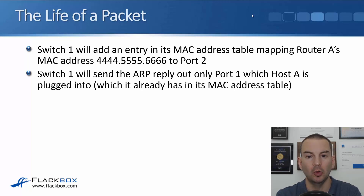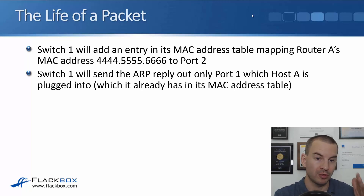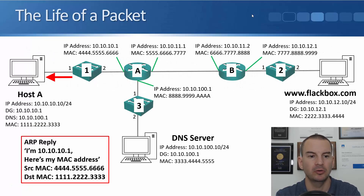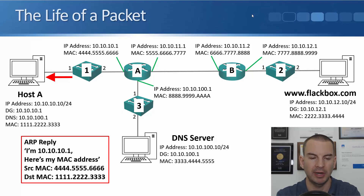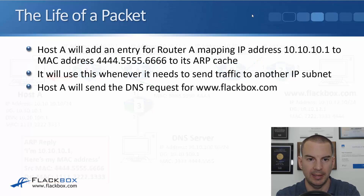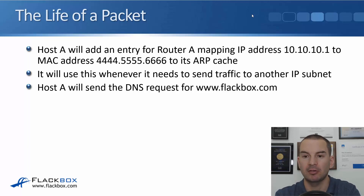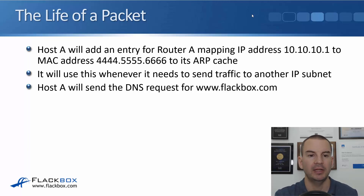Router A sends the ARP reply. Switch1 receives it and adds an entry mapping Router A's MAC address 4.5.6 to port 2. Switch1 then sends the ARP reply out only port 1 — where Host A is plugged in — because it's a unicast reply and the switch already has Host A's MAC address in its MAC address table. The ARP reply says: I'm 10.10.10.1, here's my MAC address. Source MAC is 4.5.6 from Router A, destination MAC is 1.2.3 on Host A. Host A receives that and adds an entry mapping Router A's IP 10.10.10.1 to MAC 4.5.6 in its ARP cache.